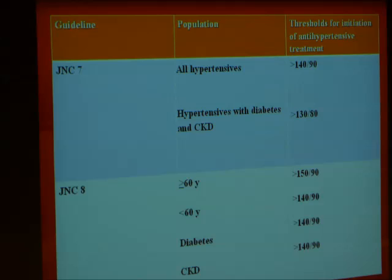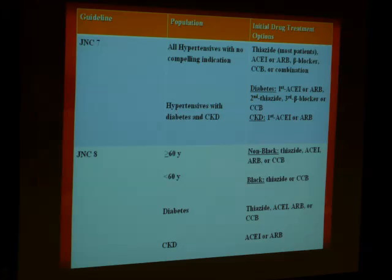One of the BP targets we want to treat once we know patients have hypertension — where do we want the patients to reach before we start treatment? JNC 7 was 140/90 for all, but for diabetes, CKD, and high-risk cardiovascular patients, less than 130/80. JNC 8, for more than 60 years, they want to bring blood pressure to 150/90. They also note that if BP drops to 140/90 during treatment and the patient is tolerating well, do not change — they are ready to accept less than 140/90.